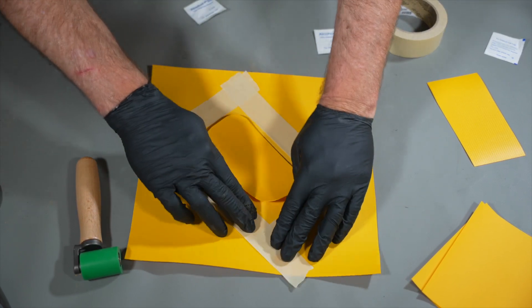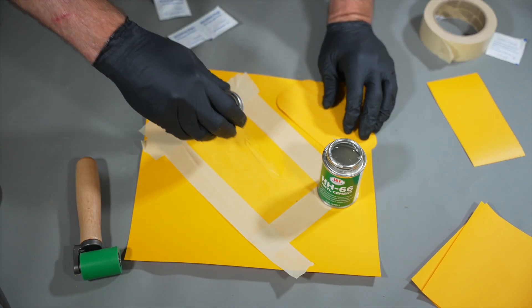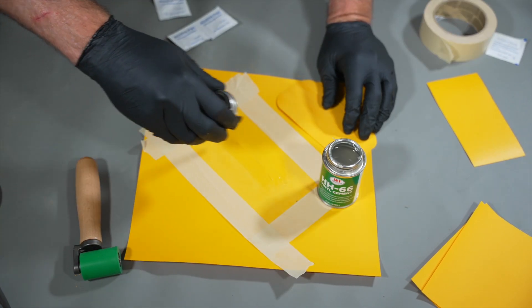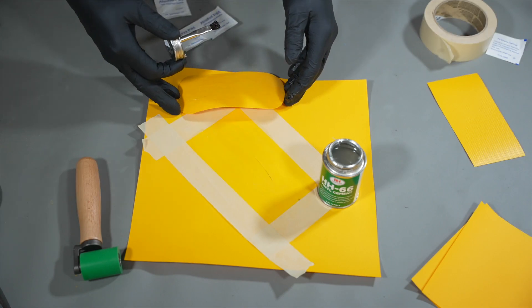Once both surfaces have been fully prepared, paint a layer of adhesive onto the masked area and the sanded side of the patch. Allow the glue to dry entirely.